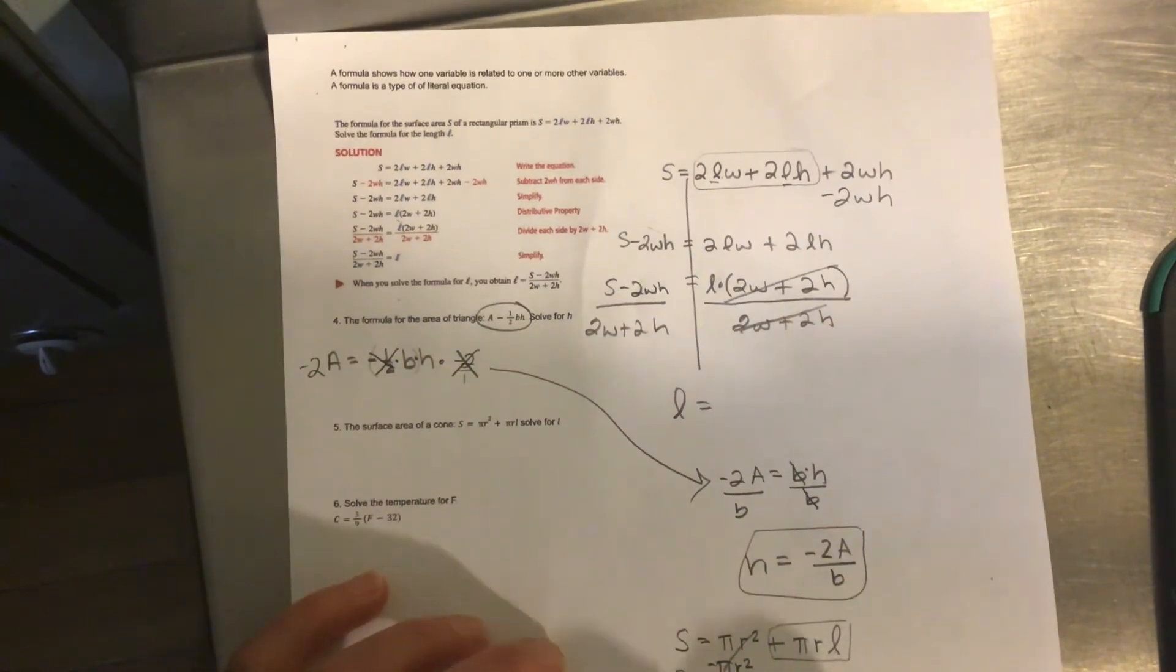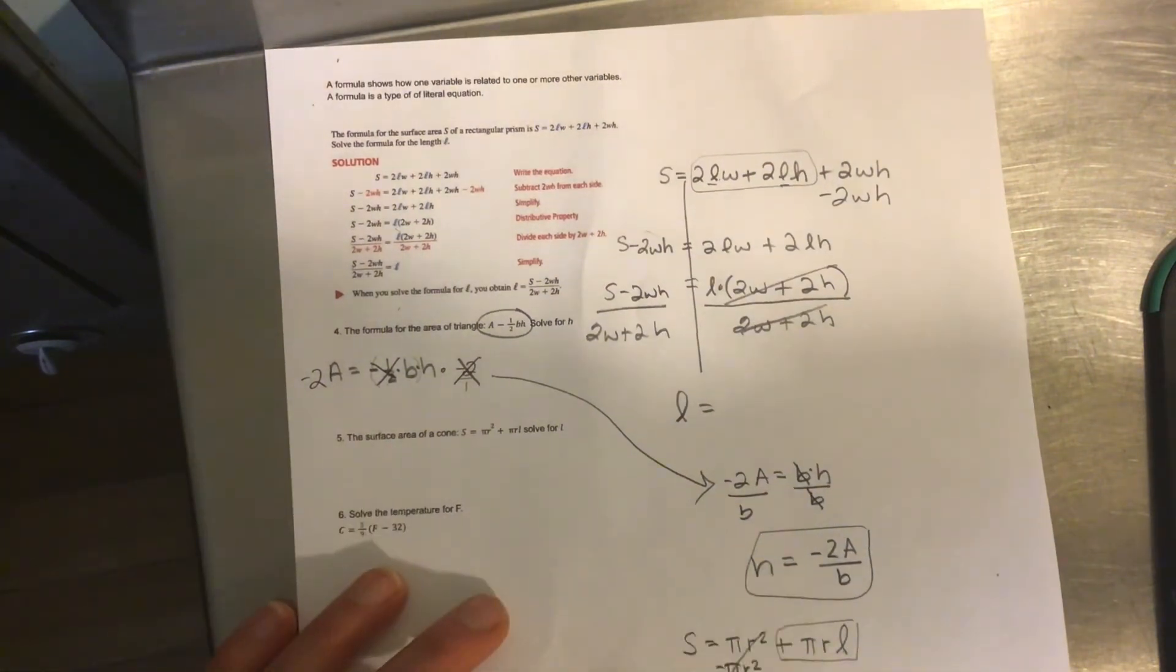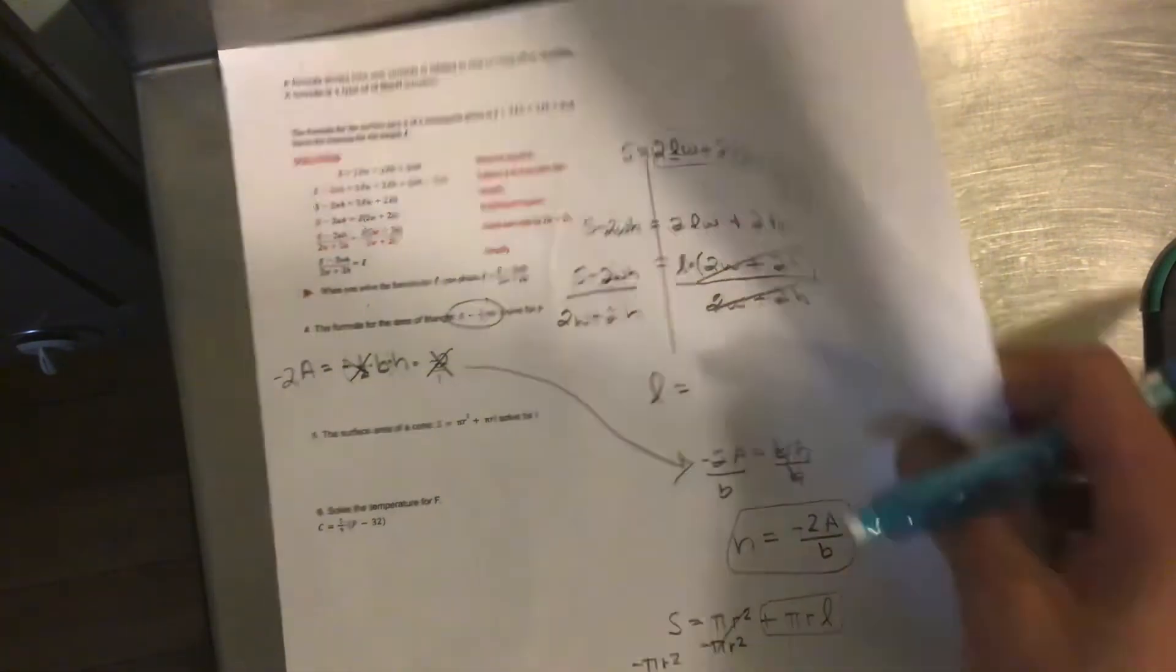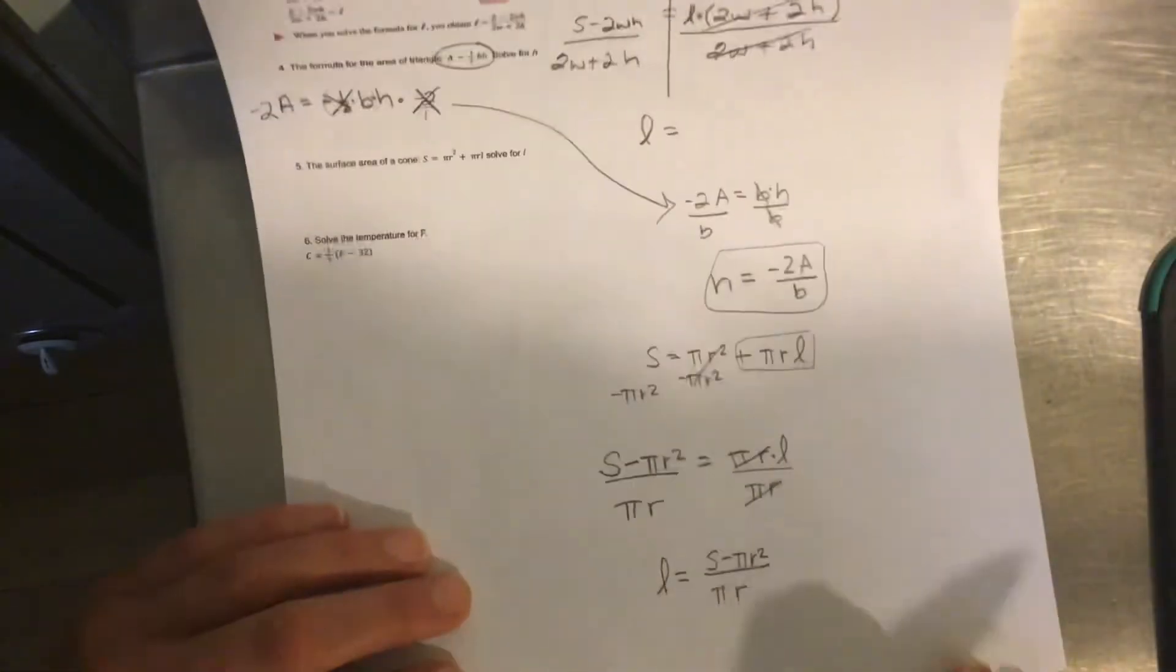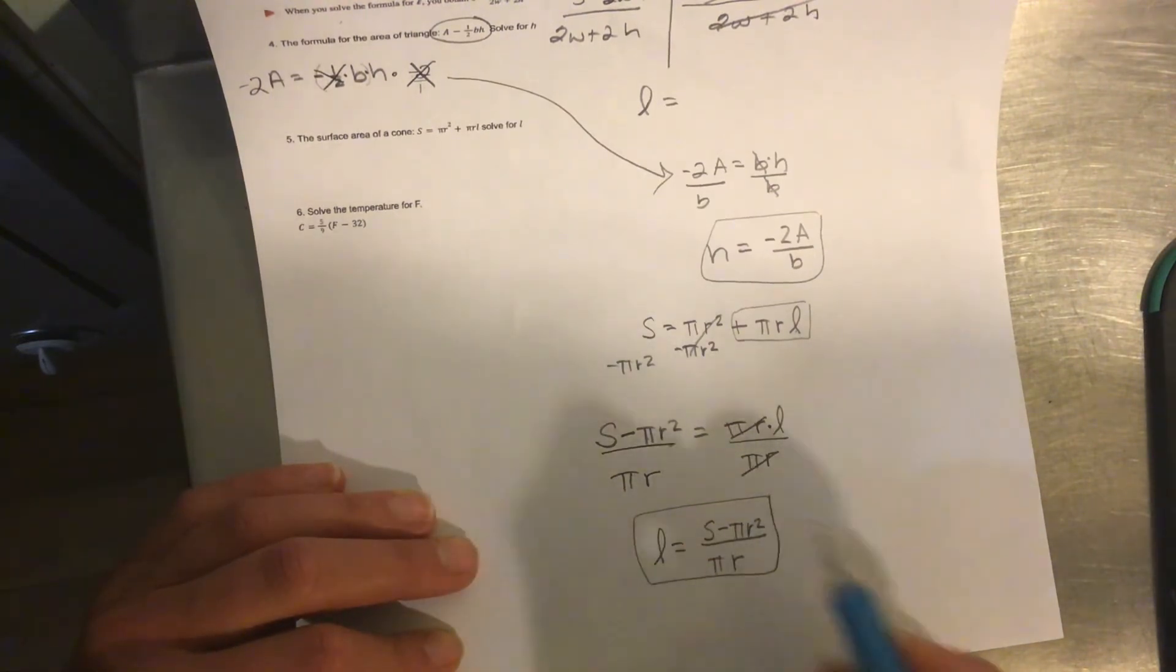And I can't reduce this because this isn't just pi. This is pi times R squared after being subtracted. So I can't reduce this at all. So my length is just S minus pi R squared over pi R. And if you've got variables that are capitalized, keep them capitalized. And if you've got them lowercased, keep them lowercased. Sorry, I went off the screen there.